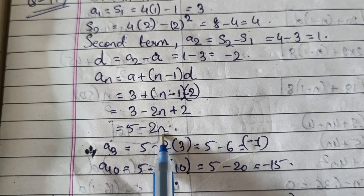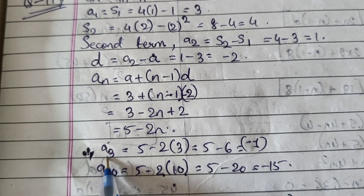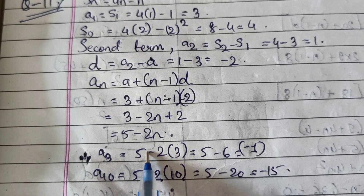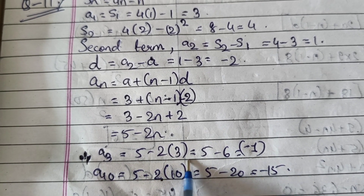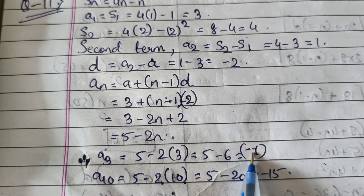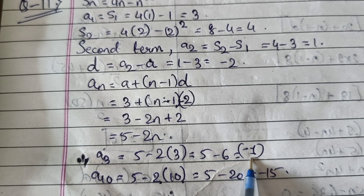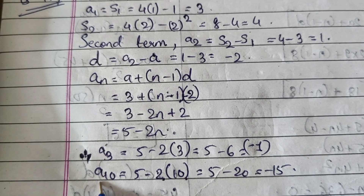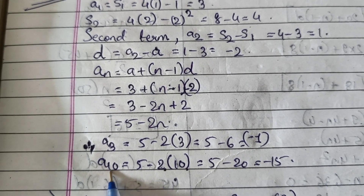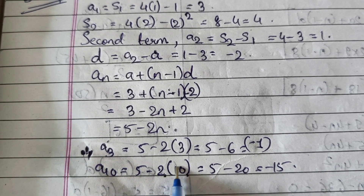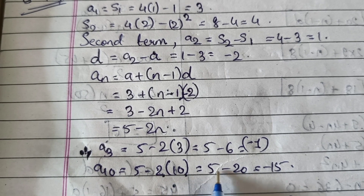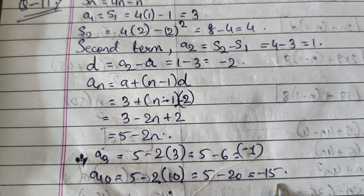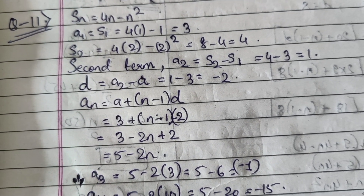Using AN = 5 − 2N: Third term A3 = 5 − 2×3 = 5 − 6 = −1. Tenth term A10 = 5 − 2×10 = 5 − 20 = −15. This completes Question 11.